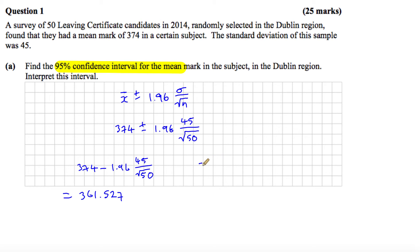And then when we do the same formula over here, this time with plus, and you can do all this on your calculator, this time we get 386.473 to 3 decimal places.